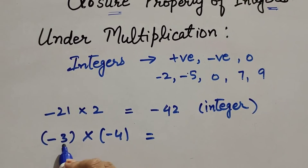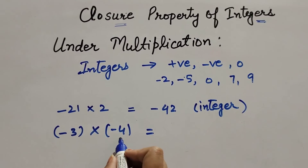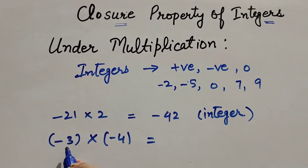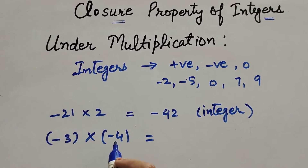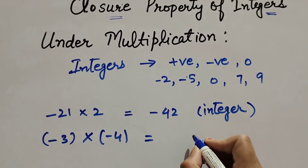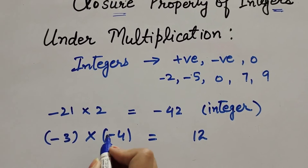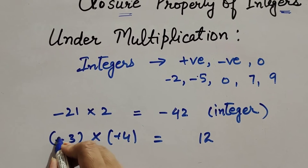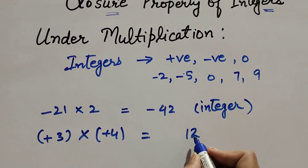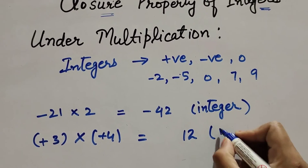Let us take one more example with two negative integers: minus three multiplied by minus four. Both are negative integers. We multiply as we would with whole numbers — three times four gives twelve. Since both are negative, minus times minus becomes plus. So minus three multiplied by minus four gives twelve, and twelve is also an integer.